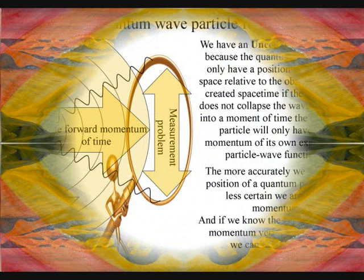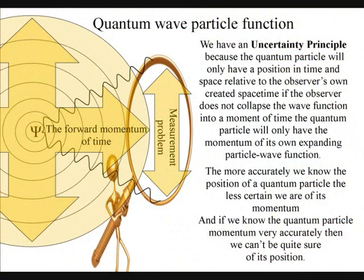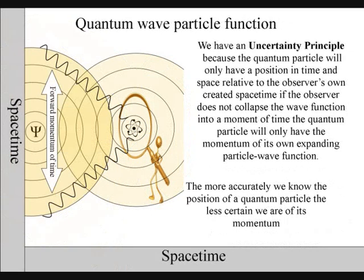In quantum physics we have a problem. It's called the measurement problem. Put very simply, the more accurately we know the position of a quantum particle, the less certain we are of its momentum. And if we know its momentum very accurately, then we can't be quite sure of its position.